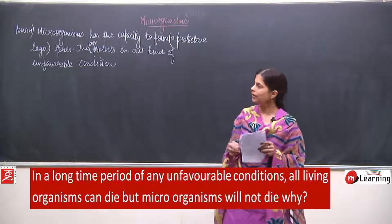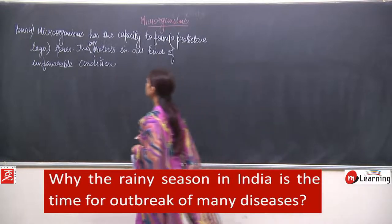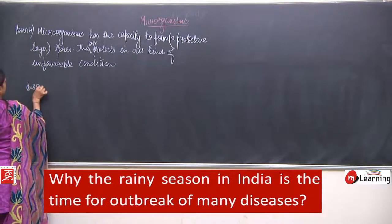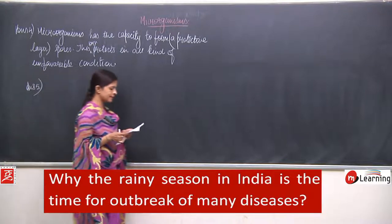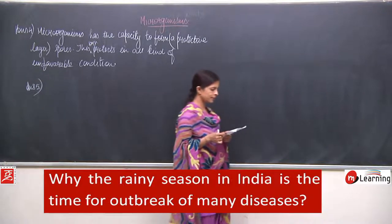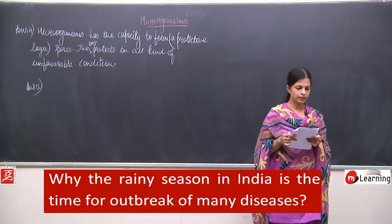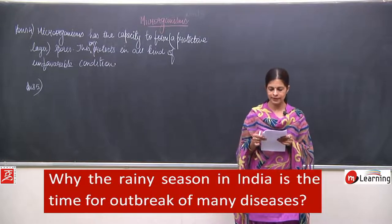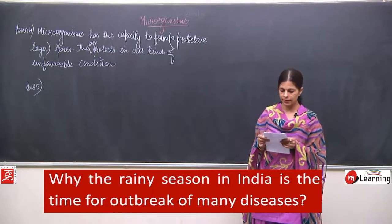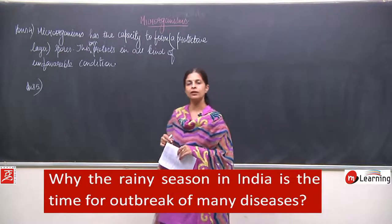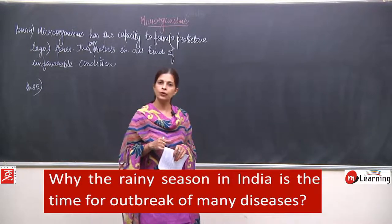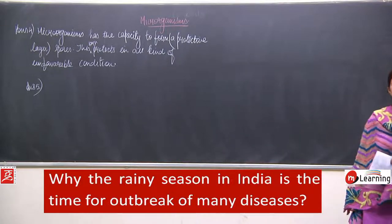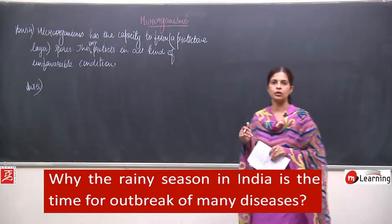Now we will talk about answer number five. The question is: why is the rainy season in India the time for outbreak of many diseases such as malaria, dengue, etc.? We all know malaria, dengue, and even chikungunya — the carriers are mosquitoes.